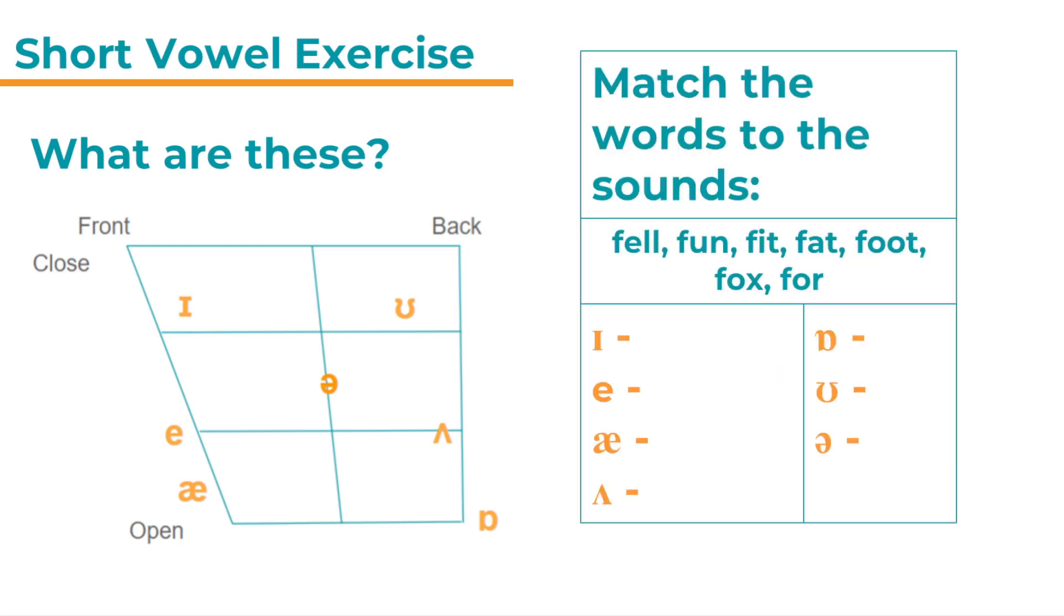Now we're going to start off with a little revision. This is a fun game. In the box on the right you see the task. You need to match all of the words to the sounds, to the sound symbols. So we've got all our vowel sounds and then we have a number of words. Let's start with the first one. Fell.